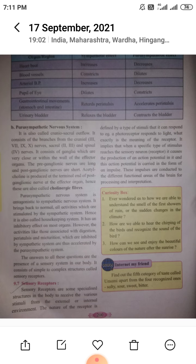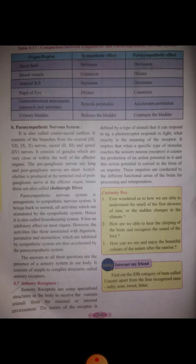Activities like digestion, peristalsis, and micturition — which means urine excretion — are inhibited by the sympathetic system and are accelerated by the parasympathetic system.